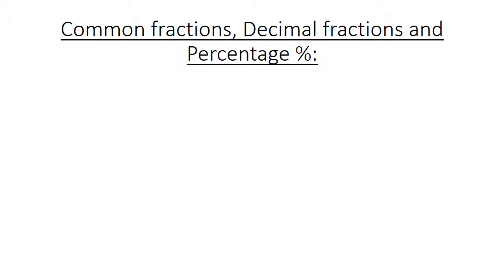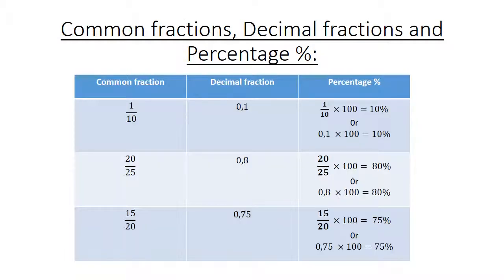Common fractions, decimal fractions and percentage. If we look at the first common fraction, 1 over 10, which is equal to 0,1, which is equal to 1 over 10 times 100, which equals 10%. Or you can also use the decimal, 0,1, again times 100, and it's also exactly the same, equals 10%.